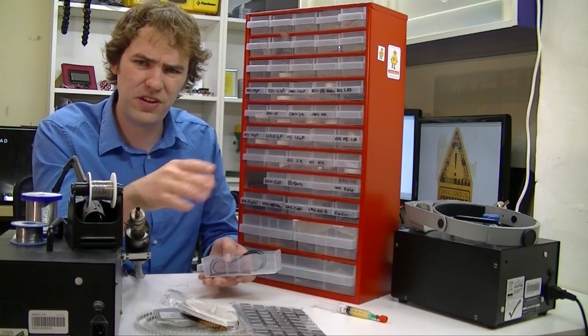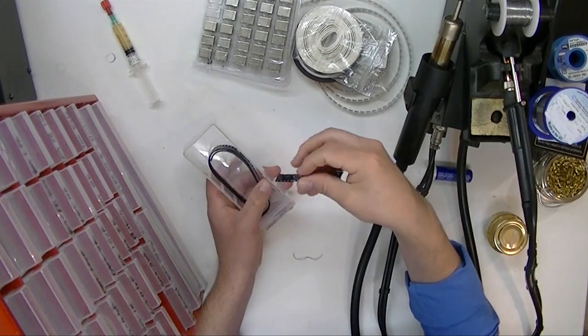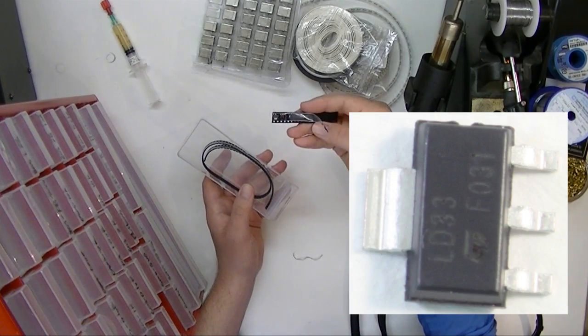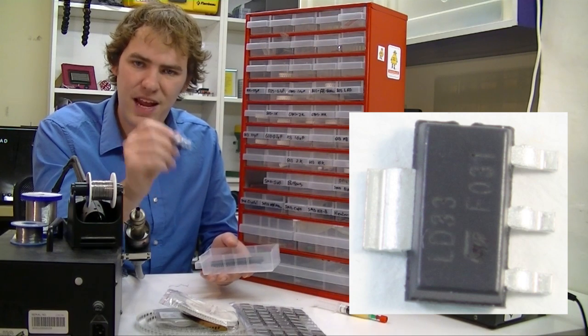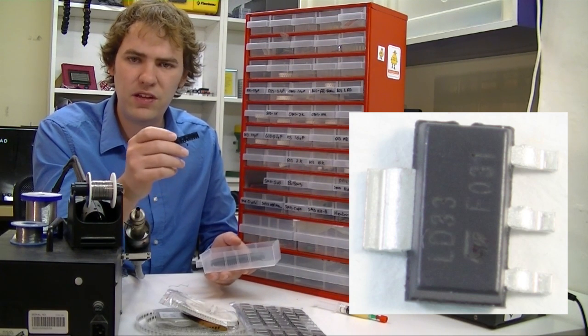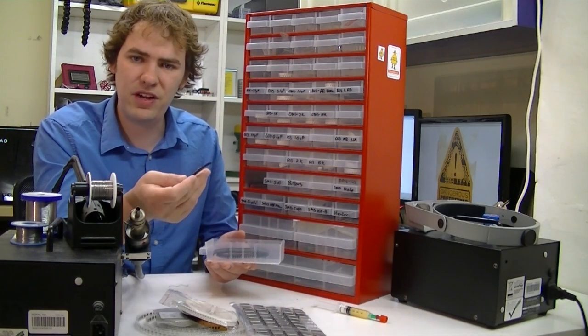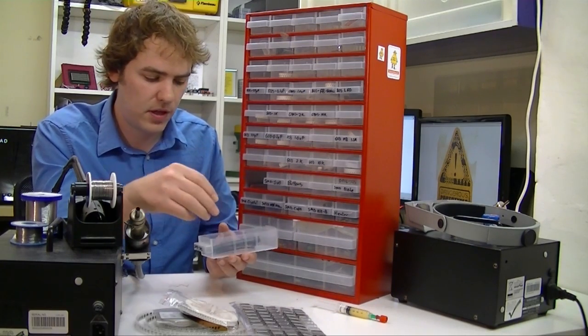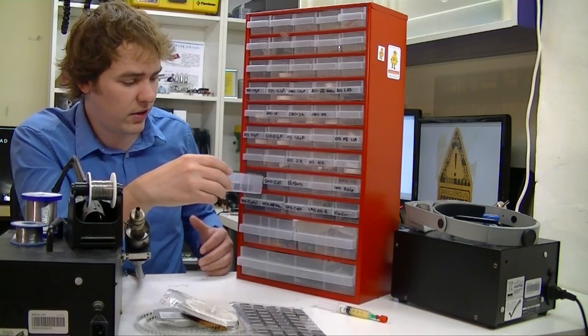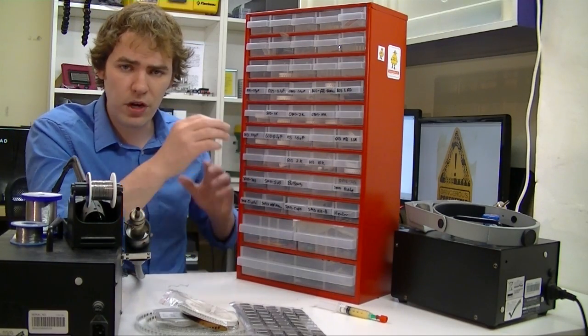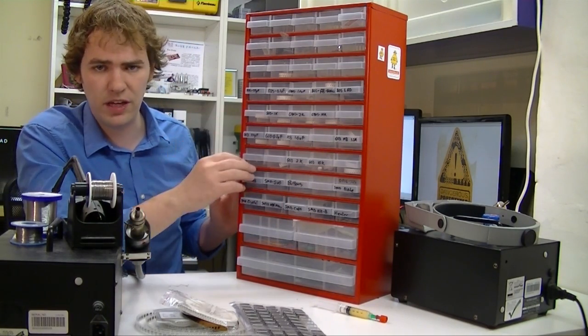This is a SOT 223, 3.3 volt regulator. It usually provides up to 800 milliamps. We use these when 150 milliamps isn't enough, or we think heat might be a problem. That's all we keep stocked here. Back in the archives, we have some bigger regulators for surface mount and through-hole, but we don't need those a lot, so we don't keep them up here.